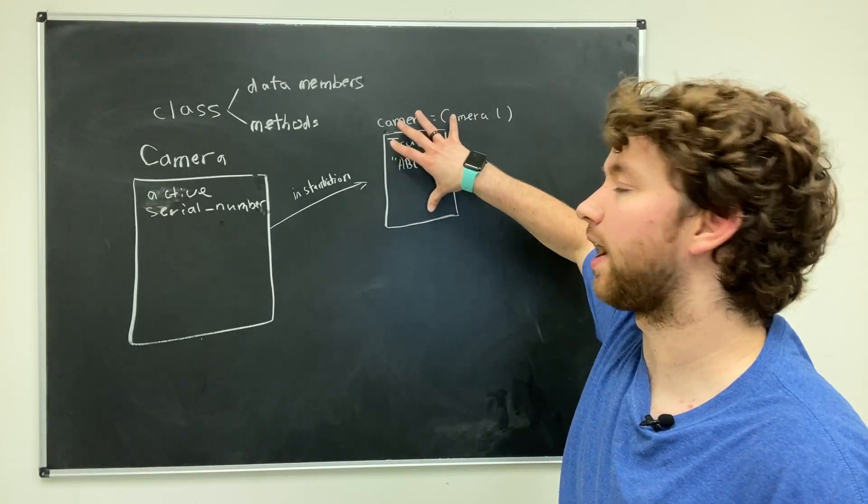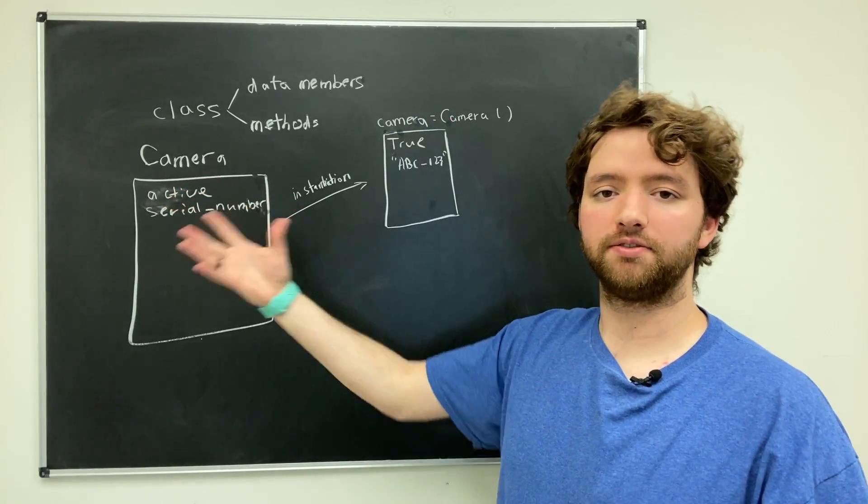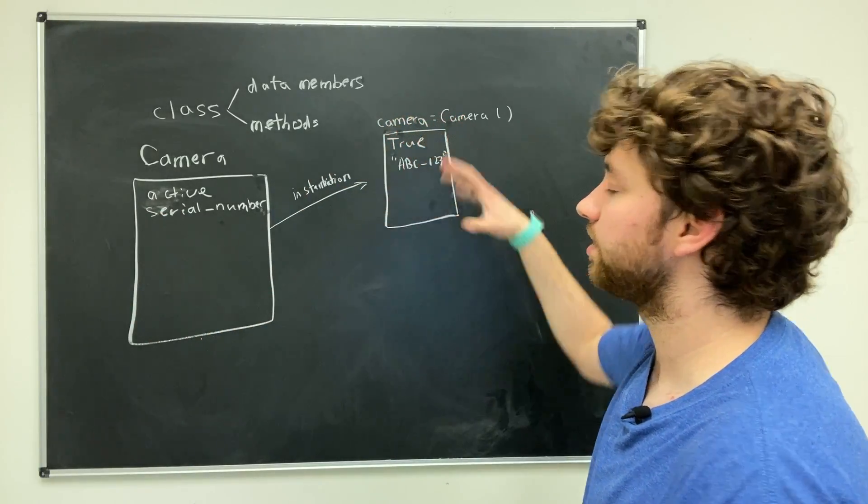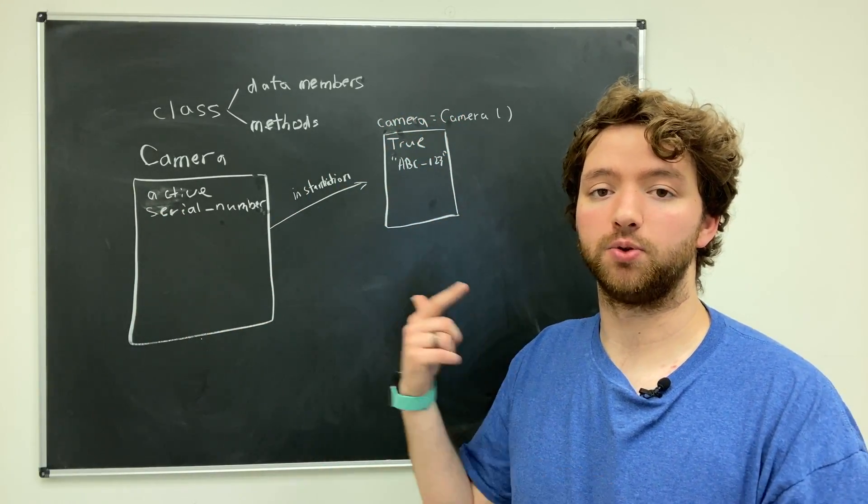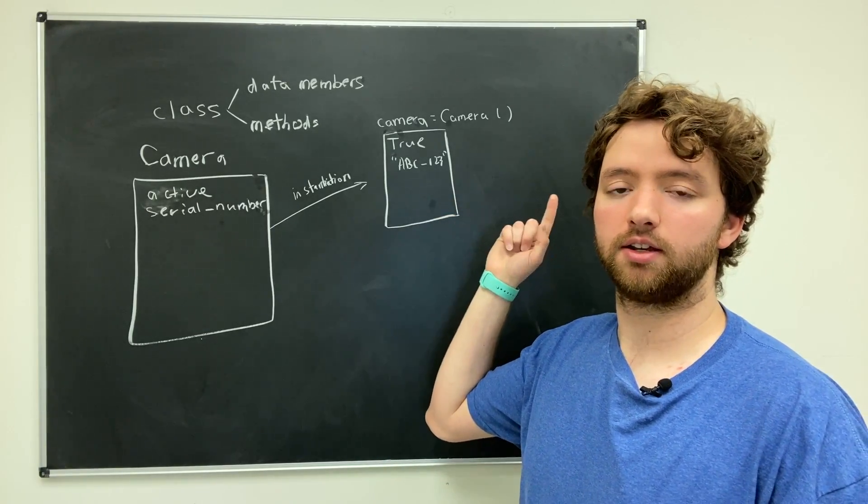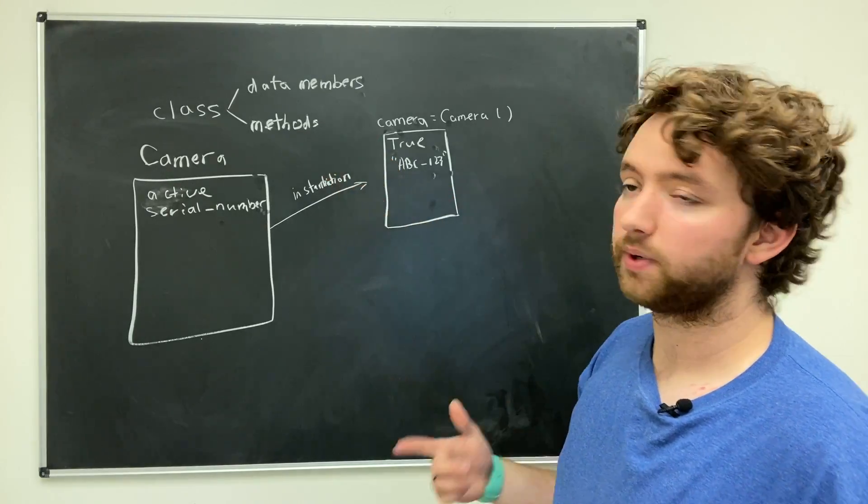We could describe that in our application using an object. The classes—these are files, they describe things, they're the blueprint. Cameras—these are instantiated during runtime. When you execute the code, you're going to create new objects, and these objects can even correlate to things in real life.